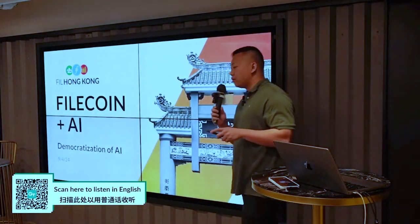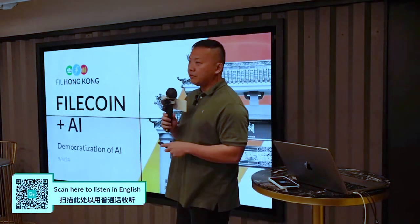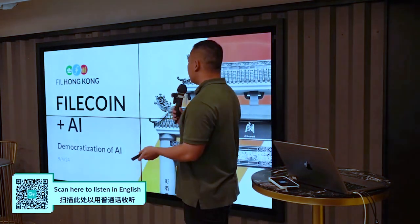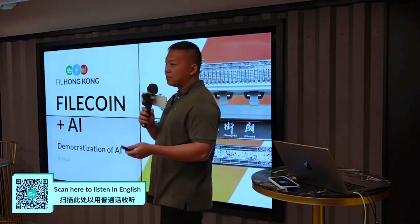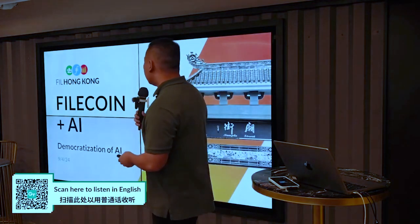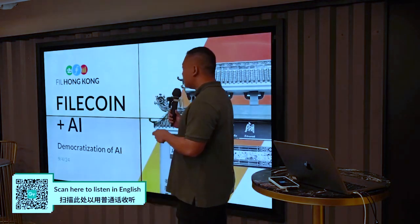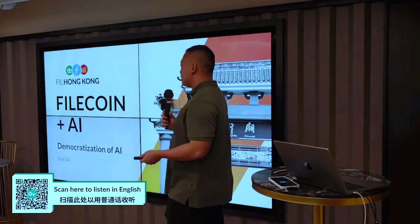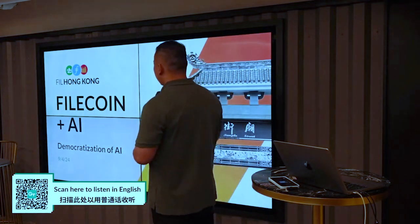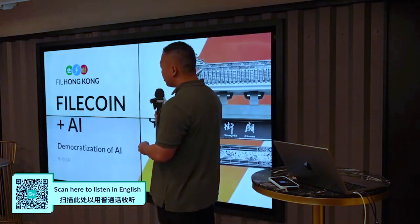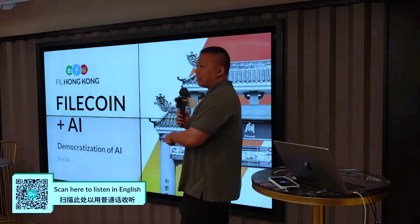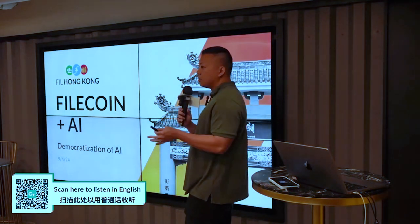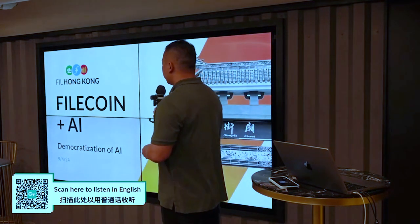Today I'm going to talk about Filecoin and AI. Filecoin is a network that stores a vast amount of data, and all this data can be applied for machine learning — it's just a matter of how we harvest it. I'm also going to talk about the democratization of AI, where a lot of smaller users can now use AI.